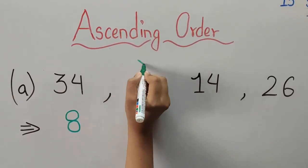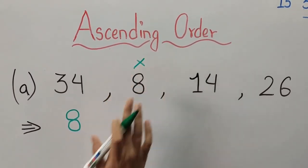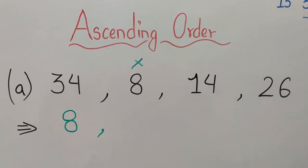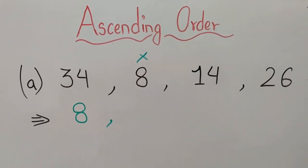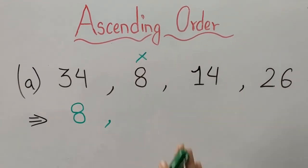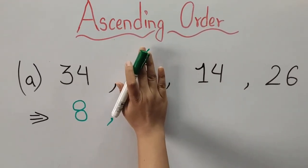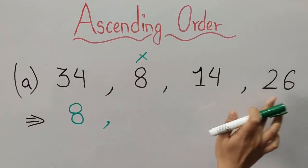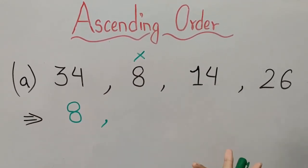So we will write eight first, as eight is the smallest number — it is a single digit number among these two digit numbers. We have written this eight over here. Now we have these three numbers left, which are two digit numbers.